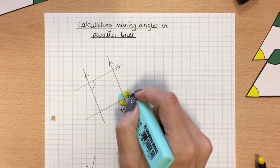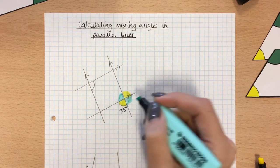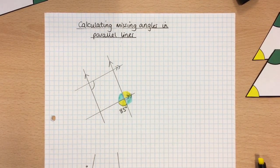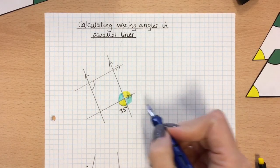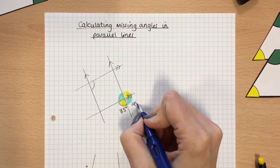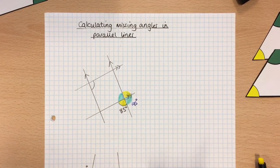Like this. So I know that these two are the same and these two are the same, so if I want to work the green ones out, I'm going to do 180 take away 85, which is 95. So I know that the yellow angle is 85 and the green angle is 95.